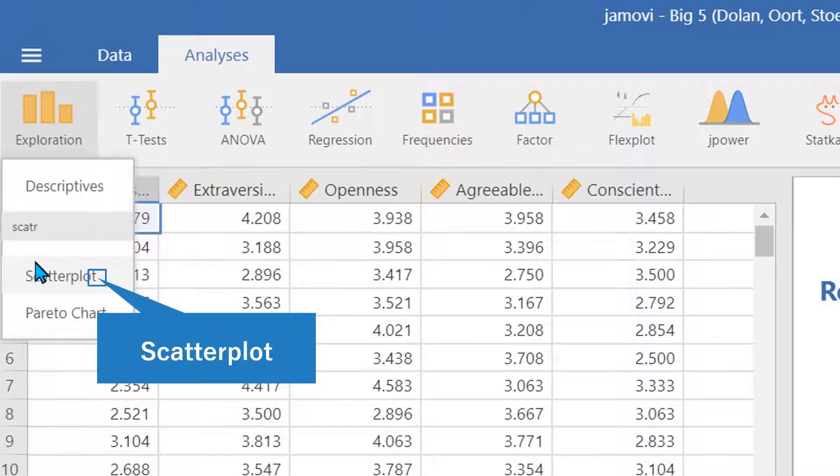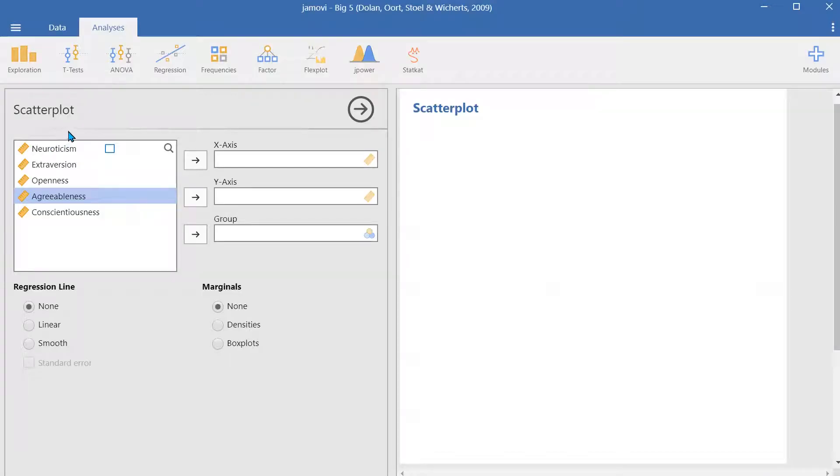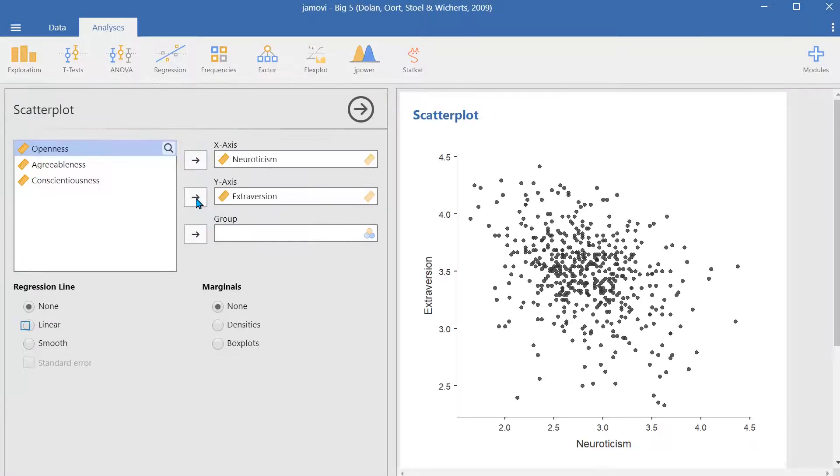Let's click on Scatterplot and insert the variables for the x-axis and y-axis, and here we have our scatterplot.